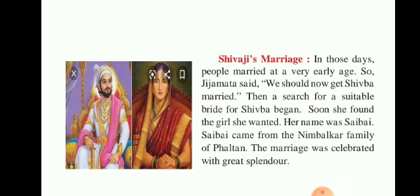Shivaji Maharaj's marriage: in those days, people married at a very early age. So Jijabai said, 'We should now get Shivaba married.' A search for a suitable bride for Shivaba began. Soon she found the girl she wanted. Her name was Sai Bai. Sai Bai came from the Nimbarkar family of Phaltan — we have heard the Nimbarkar name in the earlier chapter, as they were brave Maratha Sardars. The marriage was celebrated with great splendor, with great enjoyment and lavishly. Here you can see the images of Shivaji Maharaj and Sai Bai.